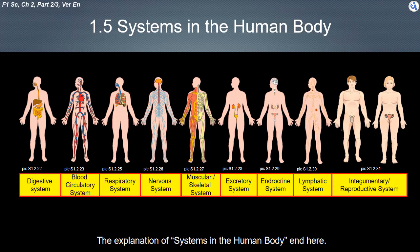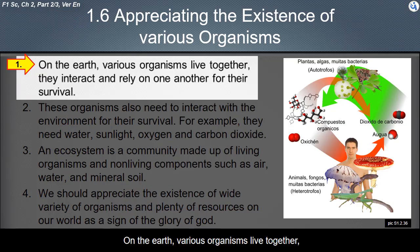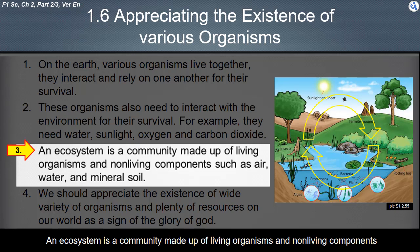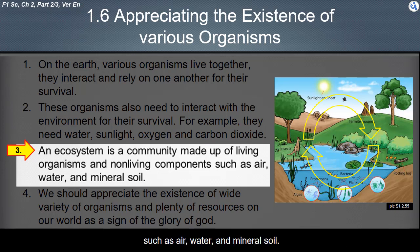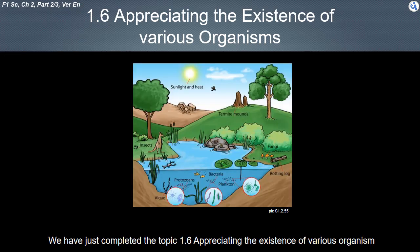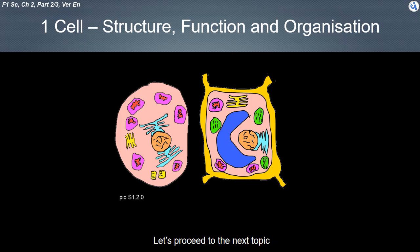The explanation of systems in the human body ends here. Now we are in the topic of appreciating the existence of various organisms. On the earth, various organisms live together; they interact and rely on one another for their survival. These organisms also need to interact with the environment, requiring water, sunlight, oxygen, and carbon dioxide. An ecosystem is a community made up of living organisms and non-living components such as air, water, and mineral soil. We should appreciate the existence of a wide variety of organisms and the plenty of resources on our world as a sign of the glory of God. This is all the content of topic 1: cell, structure, function, and organization.